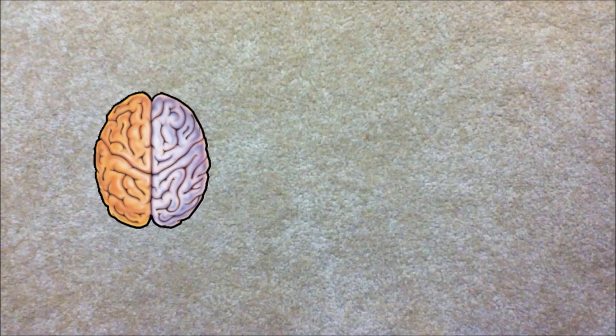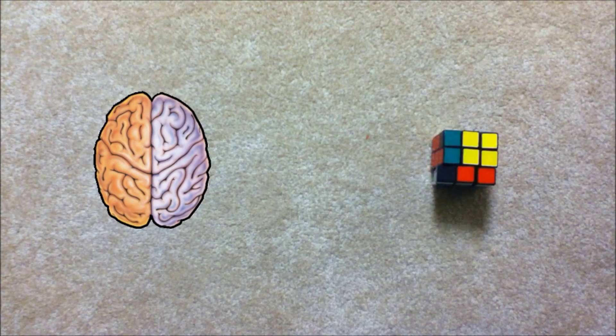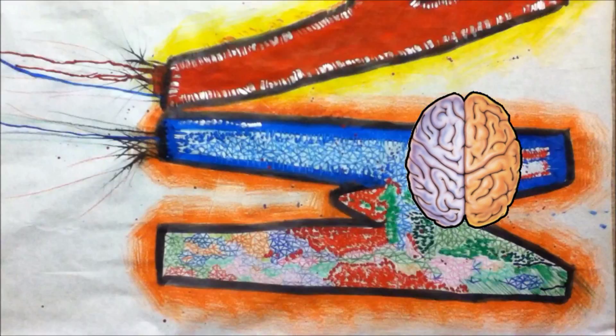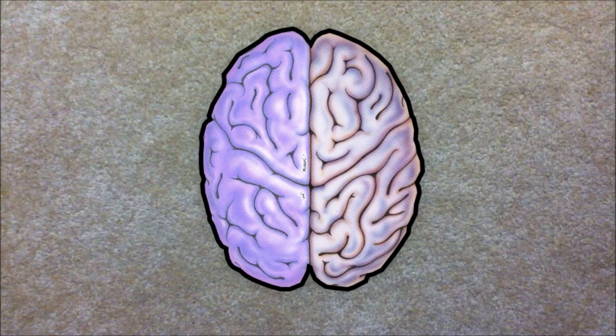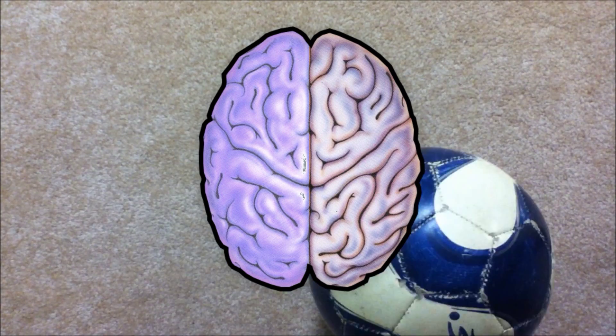Some activities require more work on the part of the left side, like solving a Rubik's Cube. Some activities require more work on the part of the right side, like creating a painting. Some activities require both, like playing soccer.